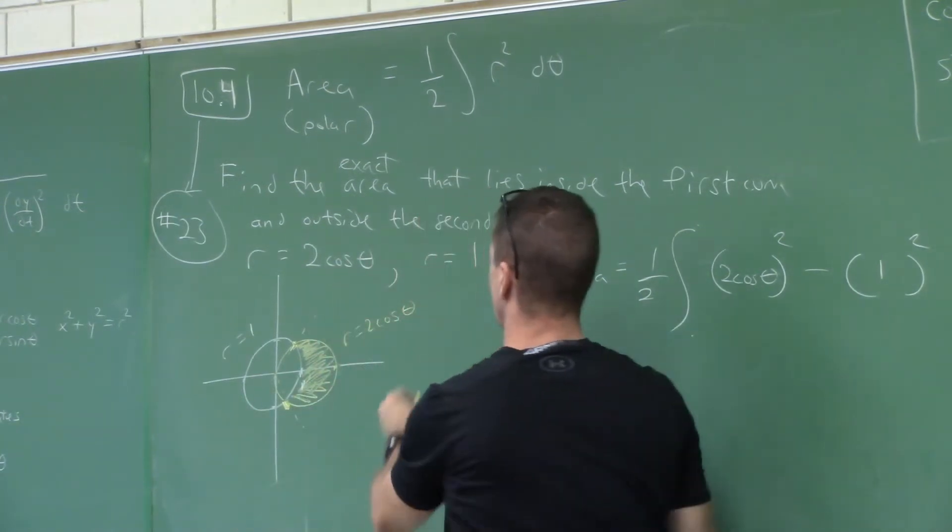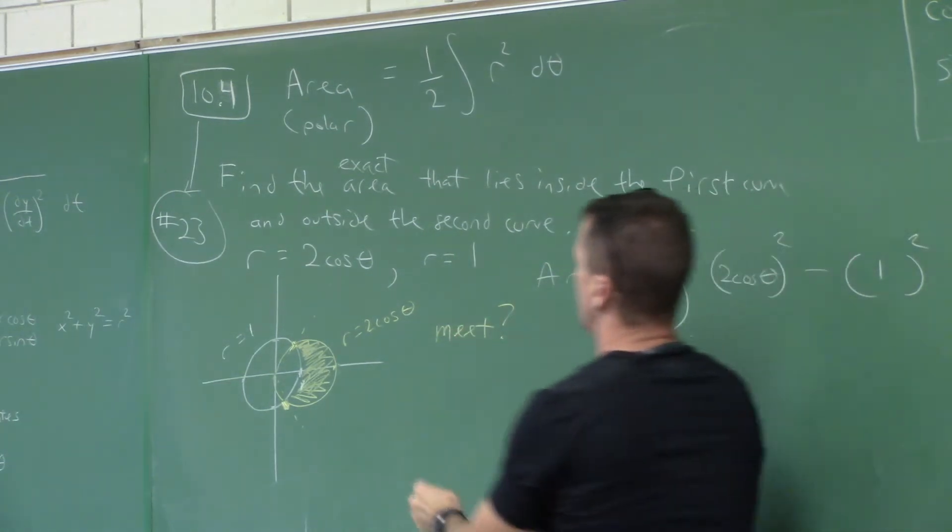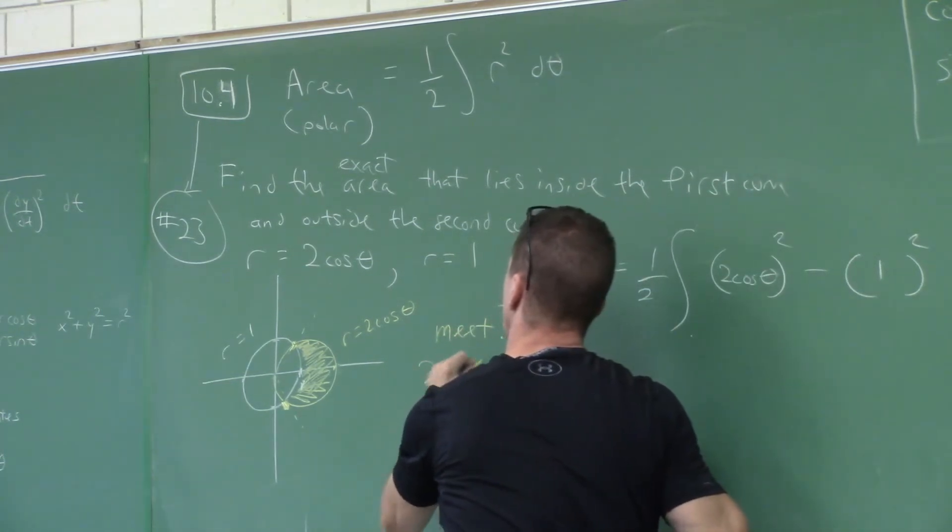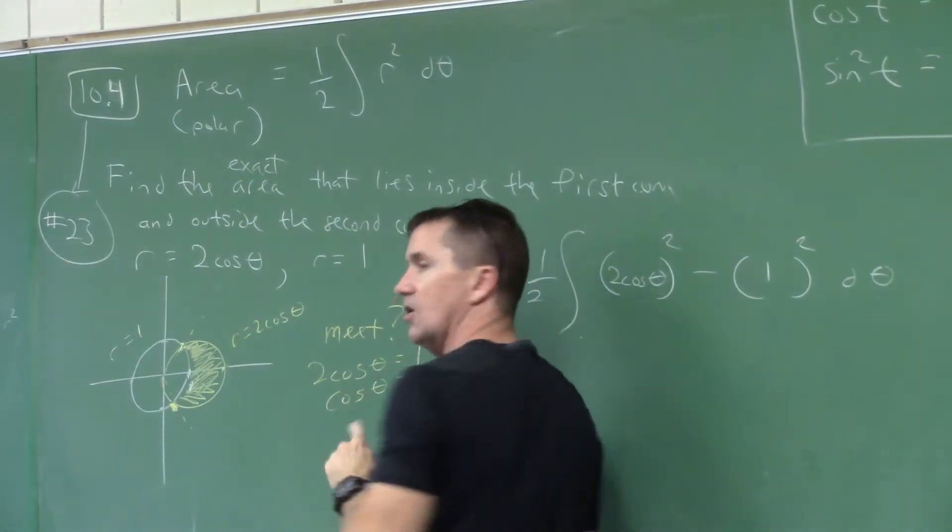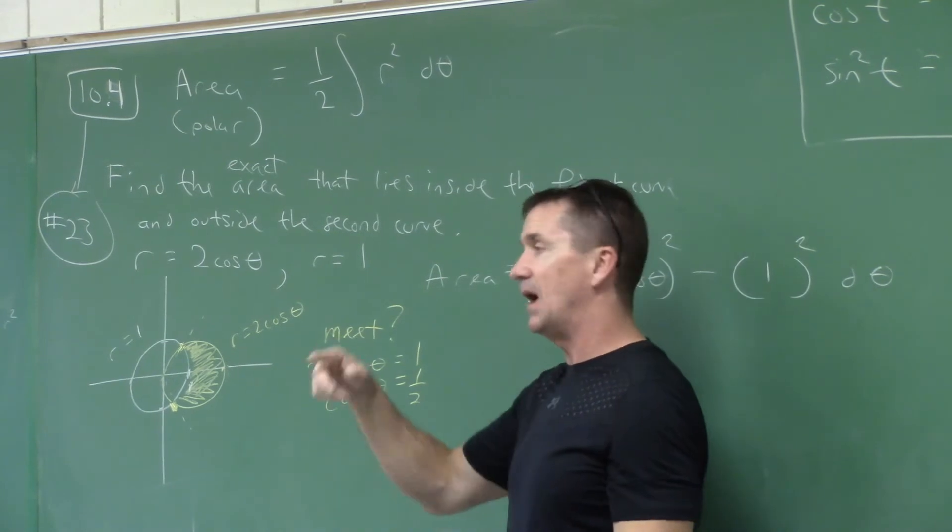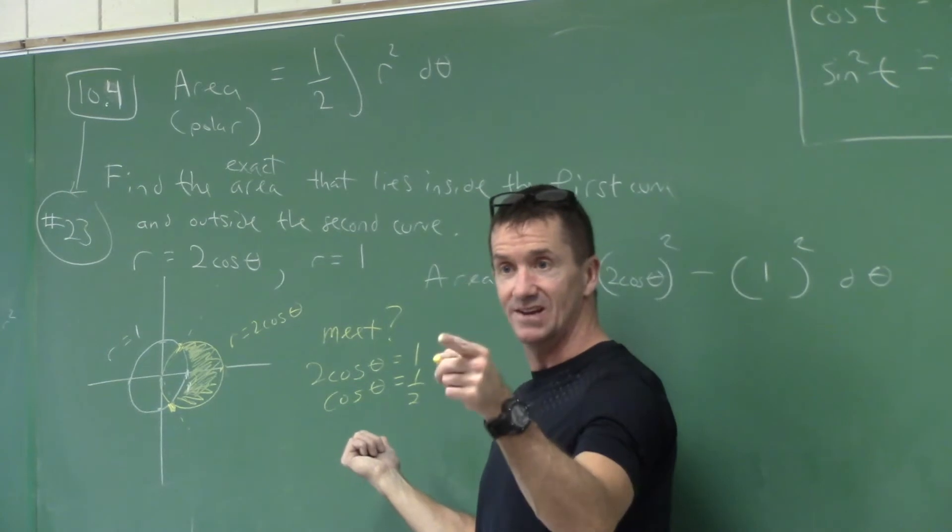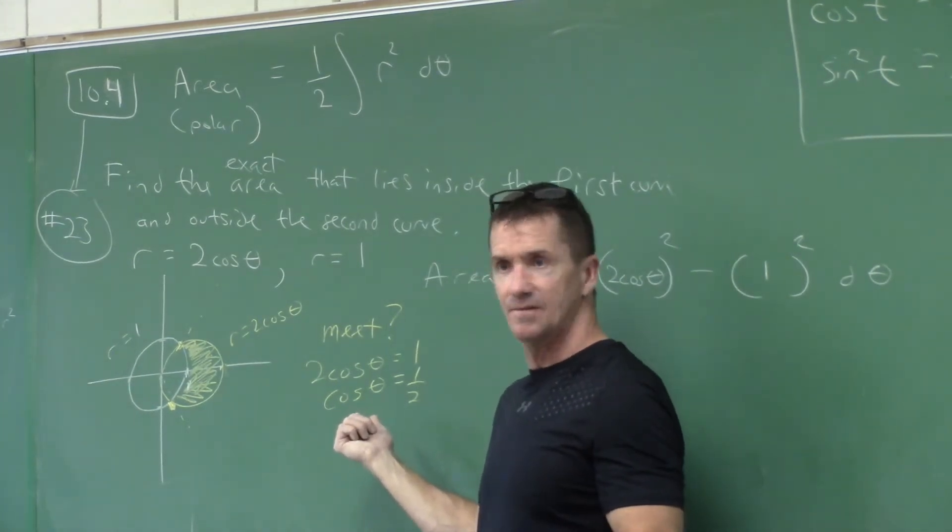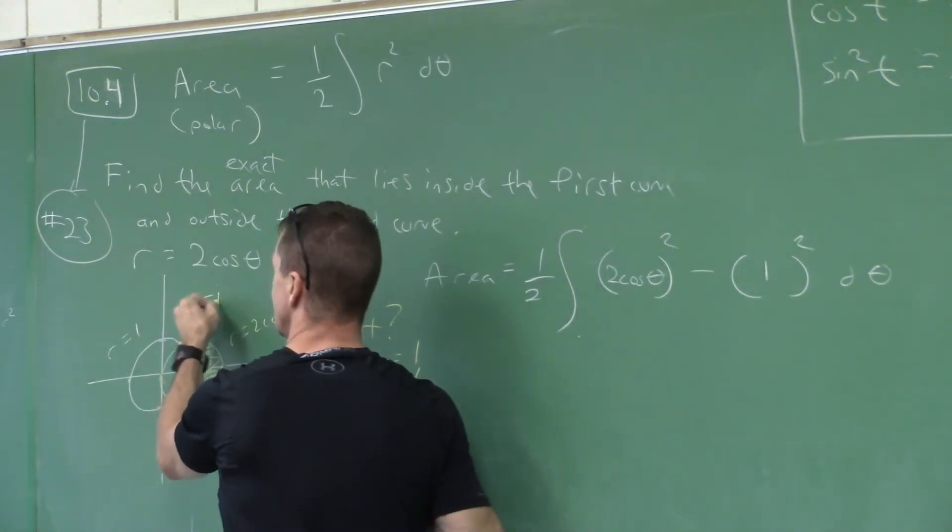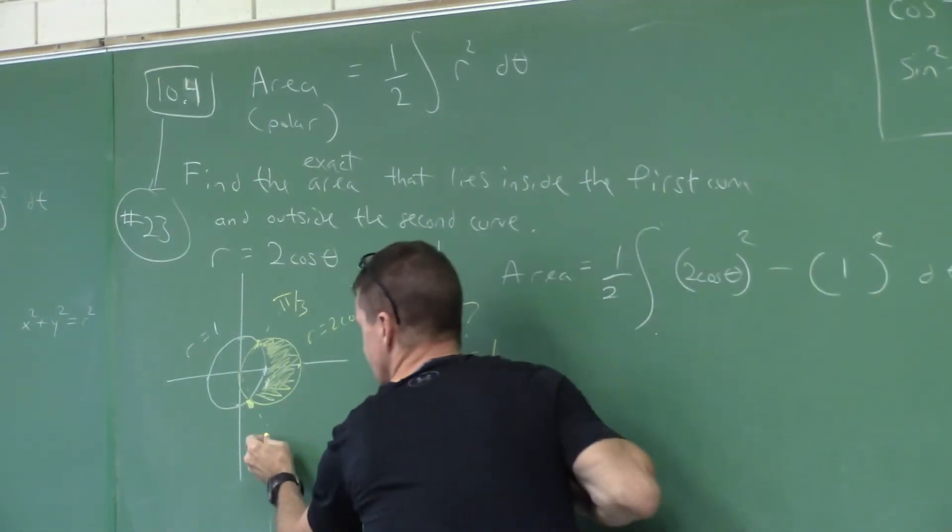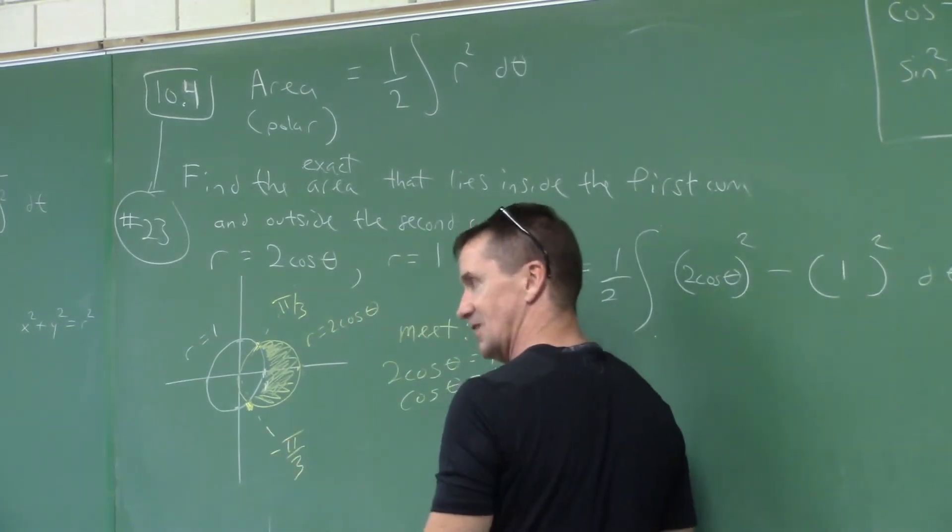What do you do with these two equations? Set them equal to each other. That's going to be our limits of integration. Where do these two graphs meet? Two cosine theta must be equal to one. Cosine theta equals one half. Who knows those numbers? Is it pi over six or pi over three? Pi over three. When cosine's a half, if that's pi over three, what would this be then? Negative pi over three. Since this would be pi over three, what's the other angle? Down here it's negative pi over three.